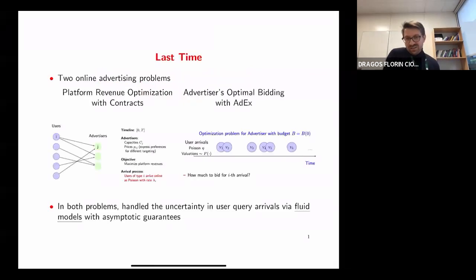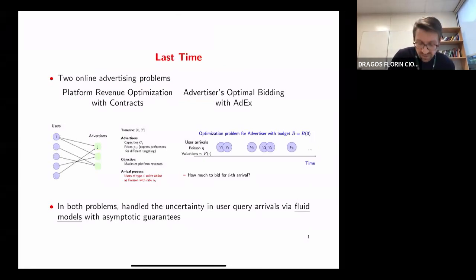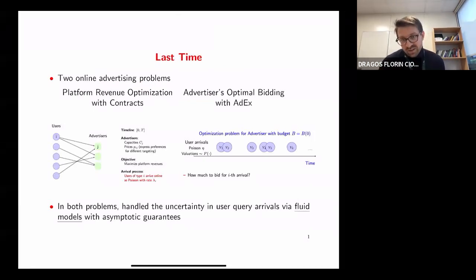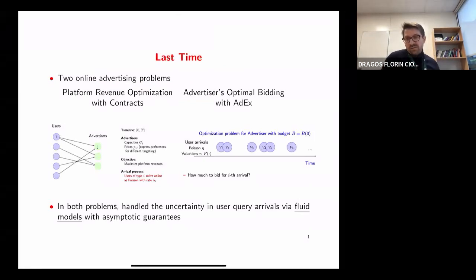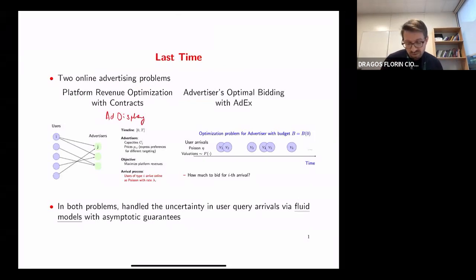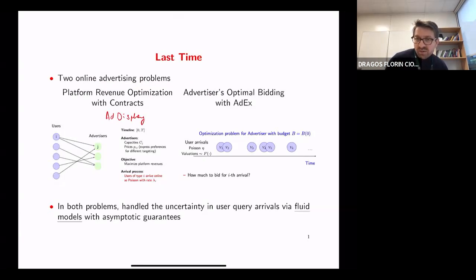Before I get into today, let me recap what we did last time and where we are. Last time we looked at two online advertising problems: a revenue optimization problem with contracts, also called the ad display problem, and a problem from the perspective of an advertiser on how to optimally bid in an ad auction.